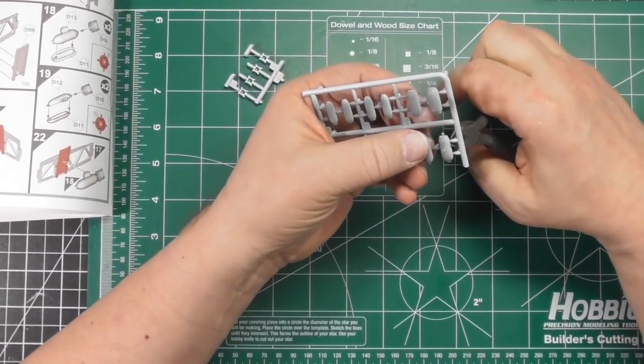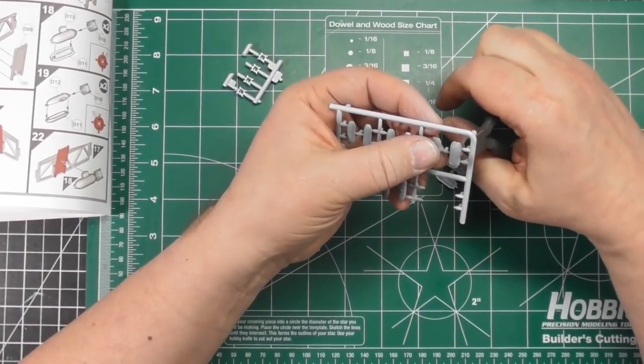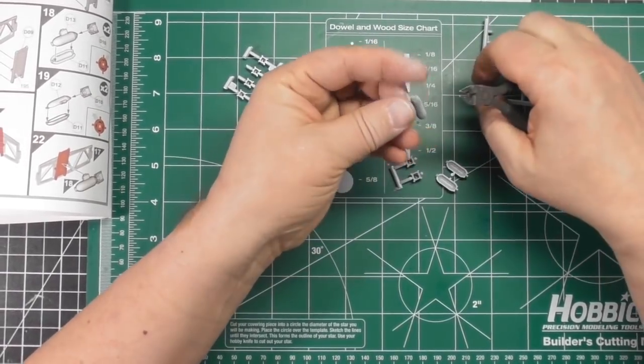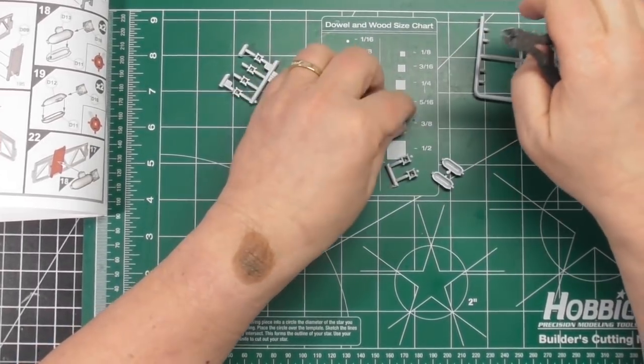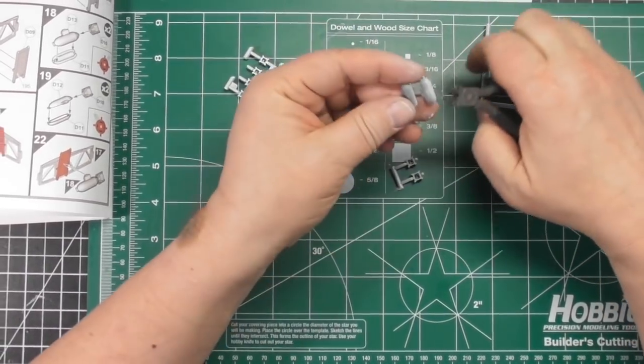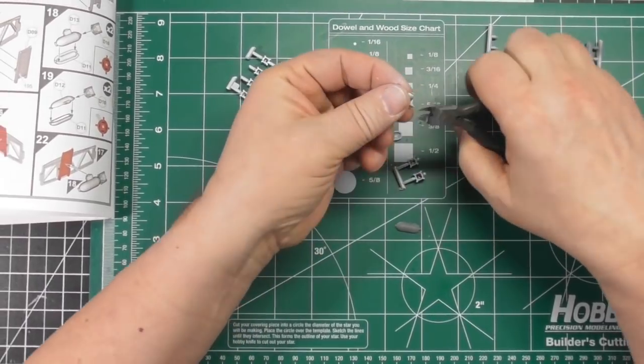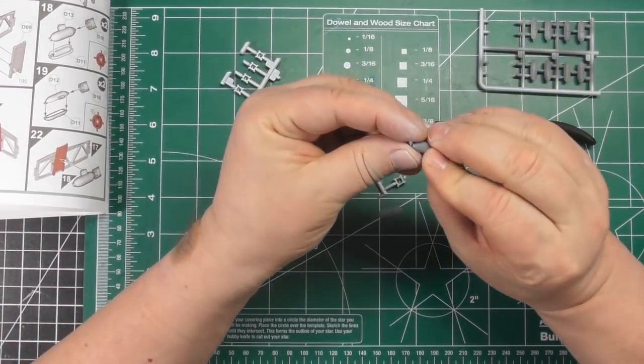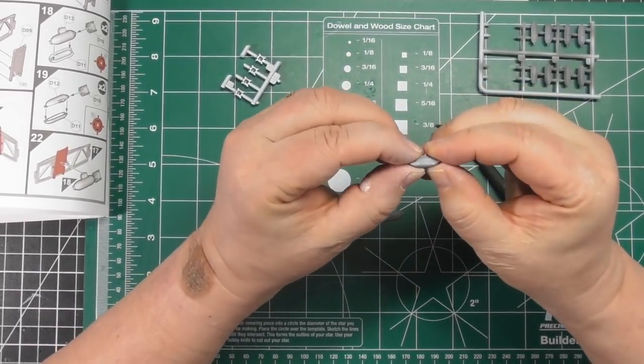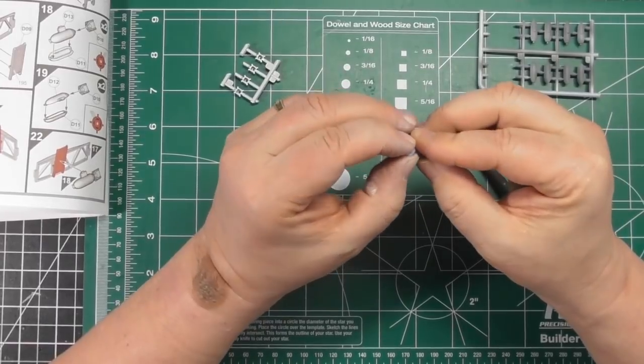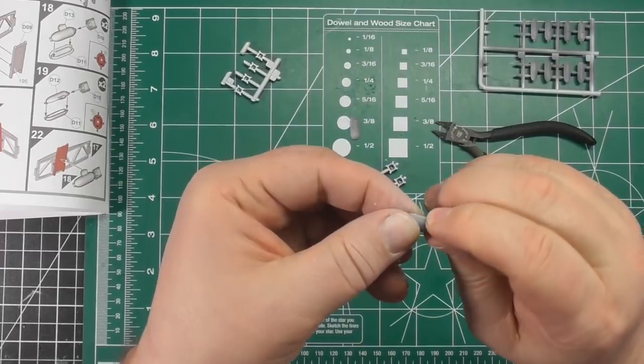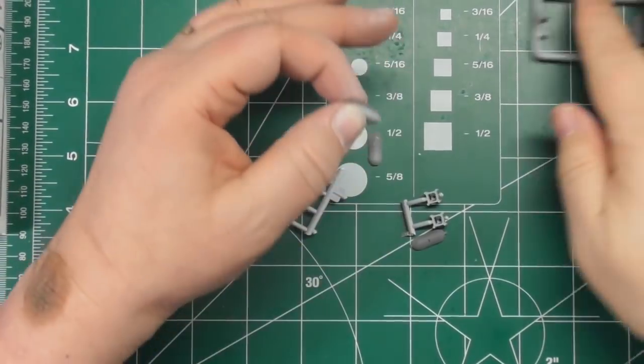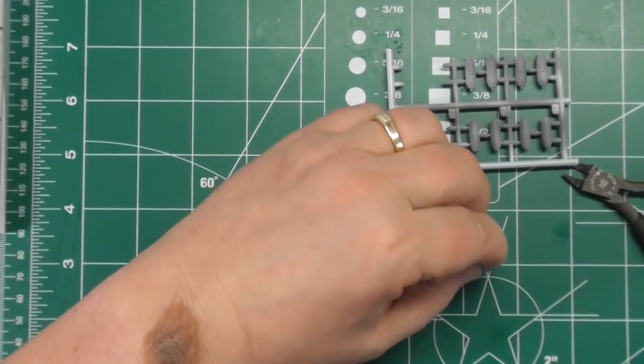As you can see I got the bombs primed but only halfway and I didn't primer the fins yet. So once we get these all together I'll probably do a complete primer coat, just so when I paint them it's an even color. They need to be a dark olive drab with a bit of weathering. Bombs didn't last long to get too dirty.